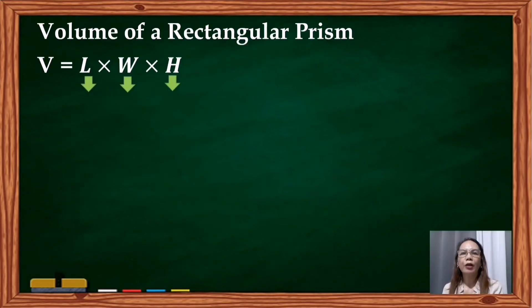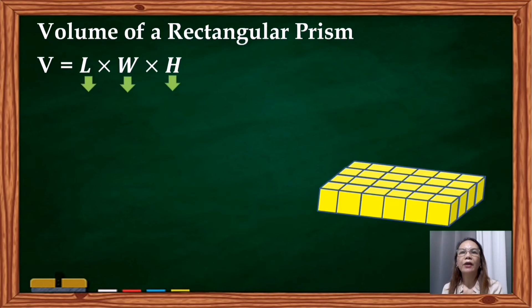So again, to find the volume of a rectangular prism, we'll just simply multiply the length times the width times the height. So we could say that each level of the rectangular prism in our example contains 24 cubes. The length is 6, the width is 4, and the height is 1. So that gives us 24 cubic units.